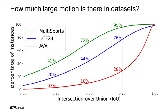Using such a definition, we can measure motion present in various action detection datasets. Here we show the cumulative density function of intersection over union measurements on the training sets of AVA, UCF24, and multi-sports datasets. The plots indicate that the multi-sports dataset has a large number of instances with large motion, making it ideal for this study.